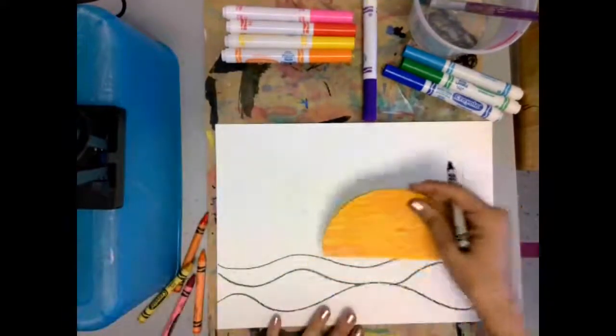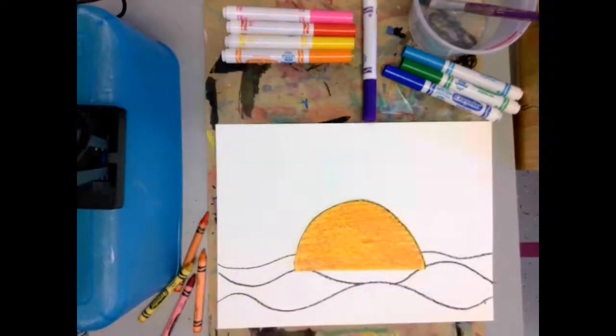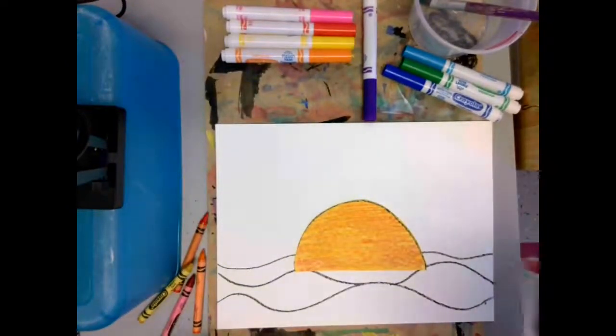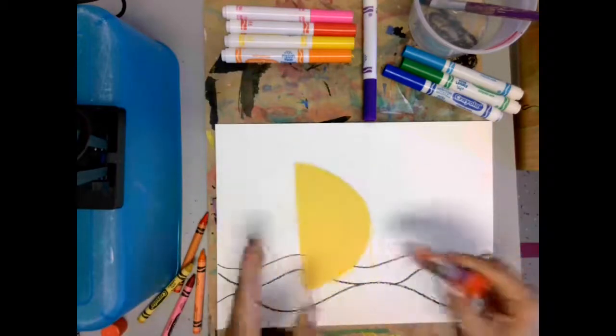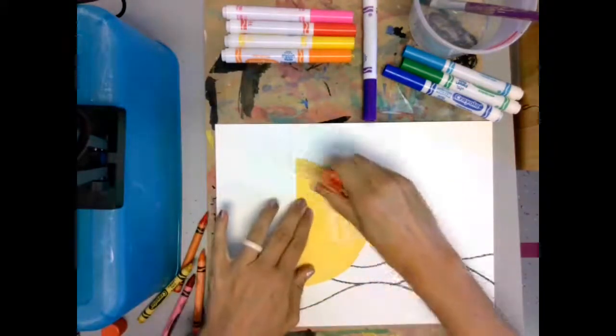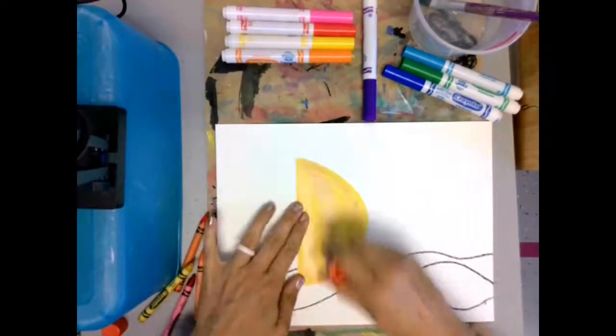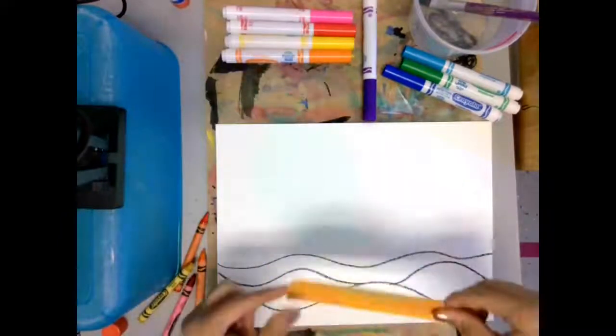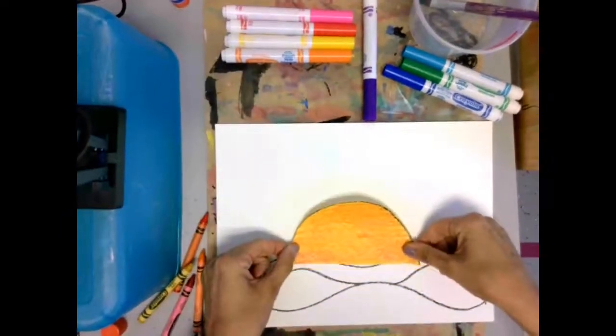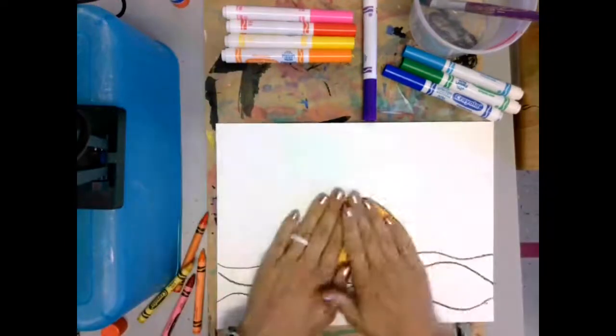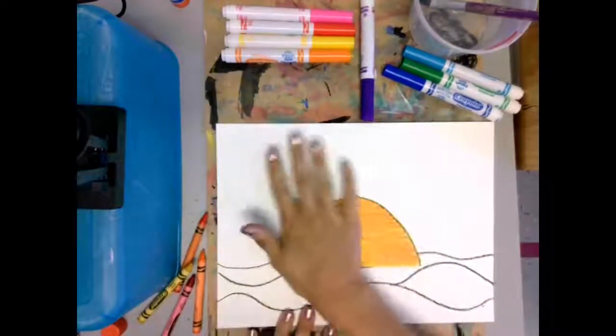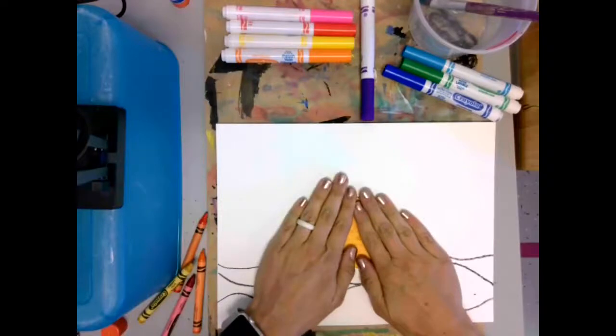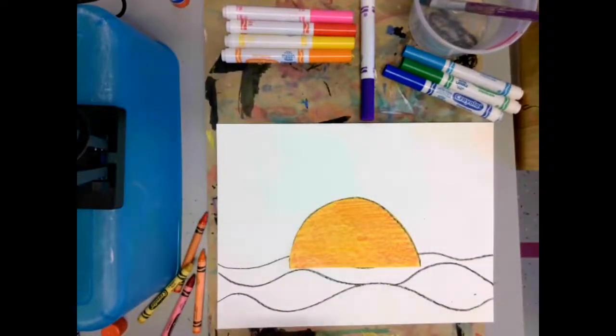And I'm going to actually get out my glue. I'm going to glue my sun down where I want it. That looks pretty good. There's our sun. Give it a little press. One, two, three, four, five.